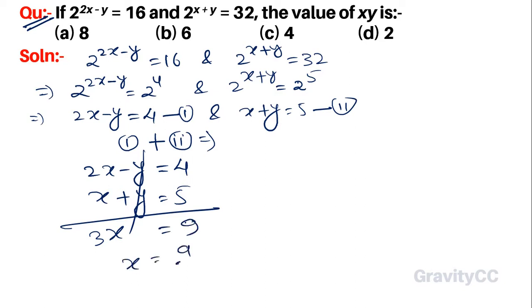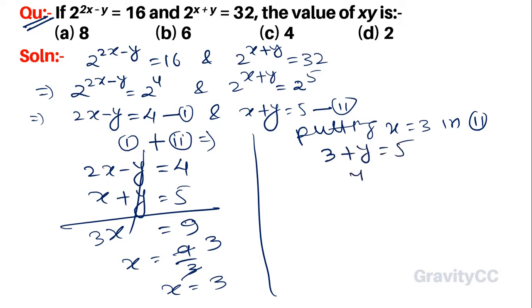Therefore x = 9/3 = 3. Putting x = 3 into the second equation: 3 + y = 5.